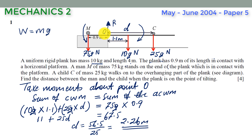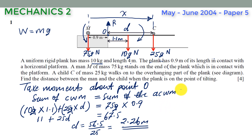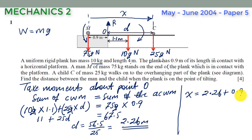The required distance x, from the man all the way to the child, is equal to d plus 0.9 meters. Substituting our value of d, x equals 2.26 plus 0.9, which gives us a final answer of 3.16 meters.